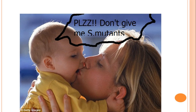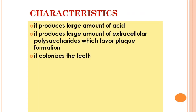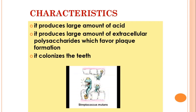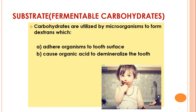Regarding pathogens — when we kiss the baby we are transmitting Streptococcus mutans, so please don't do that. Its characteristic features are that it produces large amounts of acid and large amounts of extracellular polysaccharides, which favor plaque formation, and it colonizes the teeth.